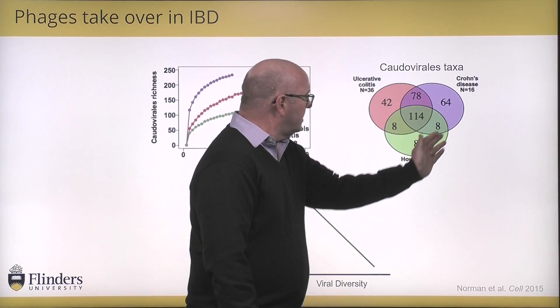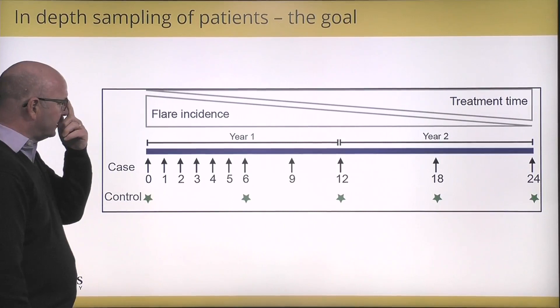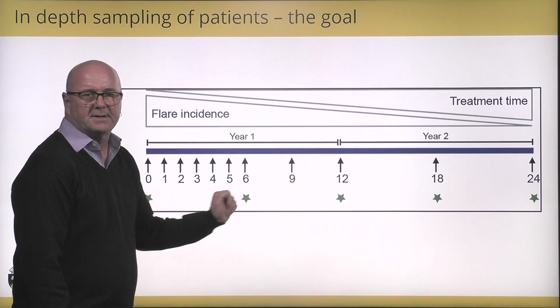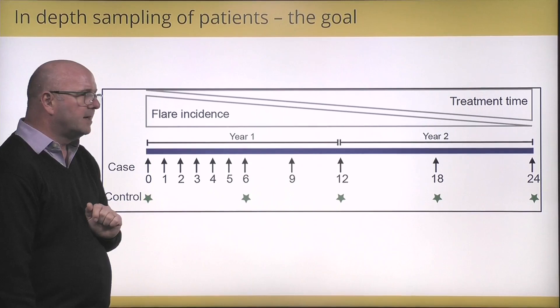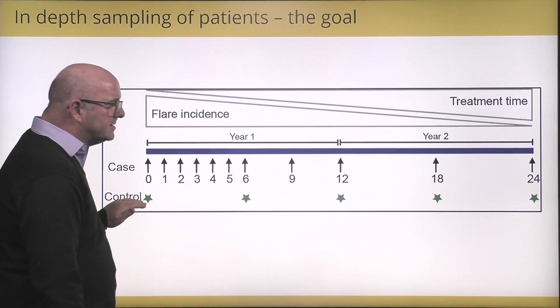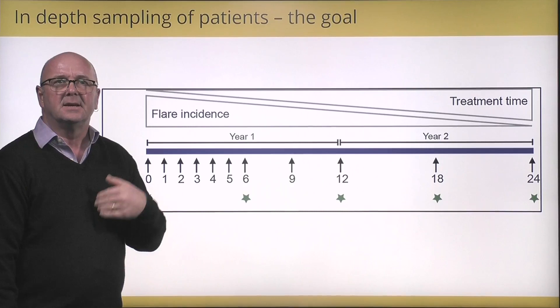If you look at the household controls, there are very few phages that are unique to those household controls. So in our latest study, we aim to collect samples from patients as they have a flare of IBD — we're going to collect samples every month for about six months, and then taper off and collect every three to six months over the next 18 months. And most importantly, when working with fecal samples from patients, you need to get controls from the same place — so we're getting household controls from people that live with our cases.